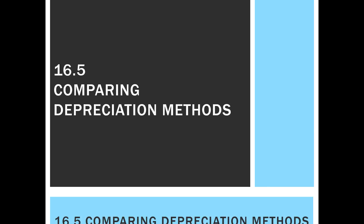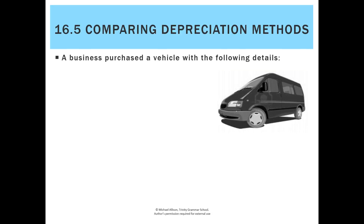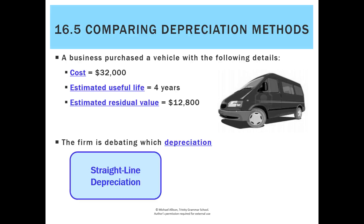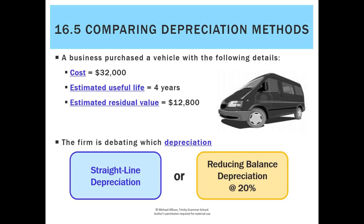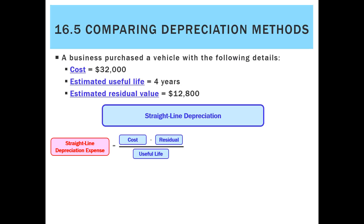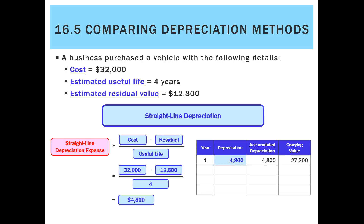Let's compare the two depreciation methods. We've got a vehicle with a cost of $32,000, an estimated useful life of four years, and an estimated residual value of $12,800. The firm is debating whether to use straight-line depreciation or reducing balance at a rate of 20%. For straight-line, we take cost less residual divided by useful life: 32,000 minus 12,800 divided by four gives us $4,800 depreciation every year.